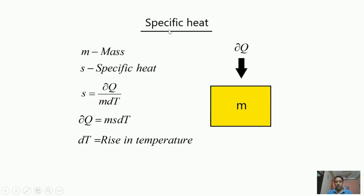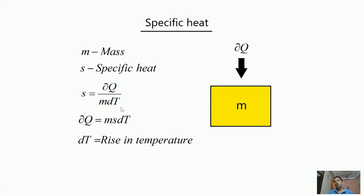Another way to express specific heat: suppose we have a mass m and we are giving an amount of heat dQ. Here m is the mass and s is the specific heat of the substance — the amount of heat required per unit mass per degree centigrade rise. If m equals 1 and dT equals 1 degree, then s equals dQ. So the amount of heat required by 1 kg of substance for 1 degree centigrade temperature rise is called specific heat.